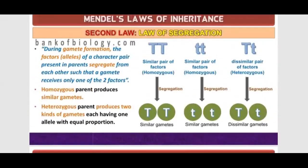During gamete formation, our pairs — whether we have capital T homozygous or heterozygous, dwarf condition or heterozygous tall condition — when we make gametes, the pairs separate.